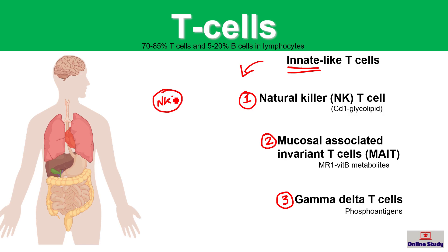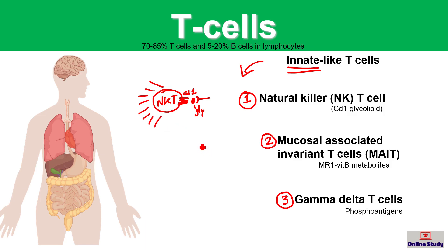Natural killer T cells recognize glycolipid molecules via the CD1 molecule on their surface. When a glycolipid is presented to the CD1 molecule of the NKT cell, the NKT cell is activated and helps to clear glycolipid-producing pathogens.